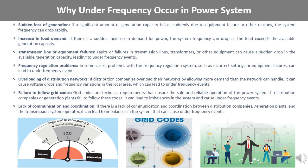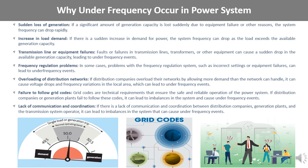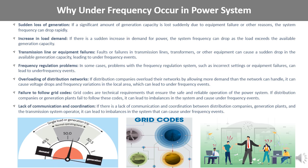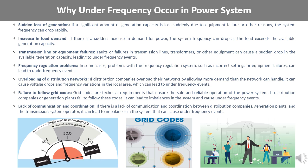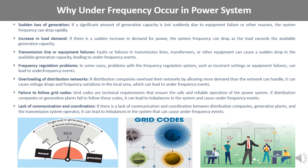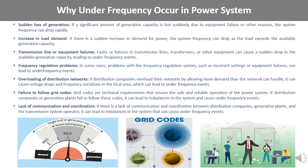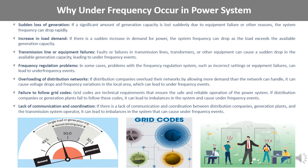In the world of power systems, under-frequency events can be a significant concern. Let's explore some of the common reasons why under-frequency events occur. One common cause is a sudden loss of generation, which can occur due to equipment failure or other unforeseen circumstances that result in a significant reduction in available generation capacity, causing the system frequency to drop rapidly. Another cause is an increase in load demand — if there is a sudden spike in demand for power, the load can exceed the available generation capacity, causing the system frequency to drop.